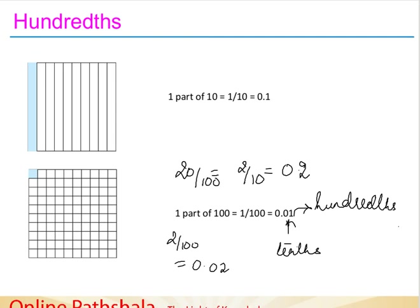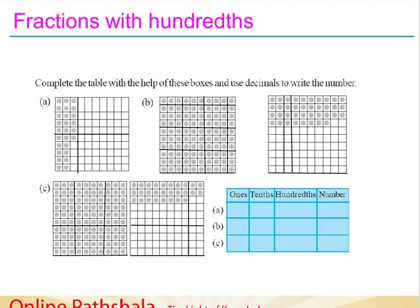Going to the next example. Here we are given some blocks and asked to represent the numbers — the dots in that box — into a place value table of ones, tenths, hundredths, and number. The whole square represents the ones. If the square is fully filled with dots, it represents one.